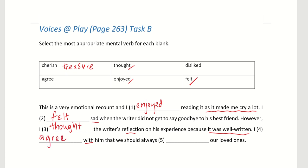Sentence 4: 'That we should always ___ our loved ones.' The answer is 'cherished,' because it means treasure our loved ones. So 'dislike' is the only option that was not used.